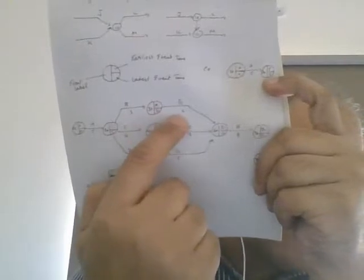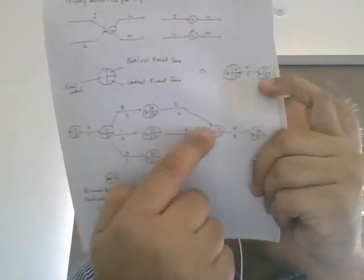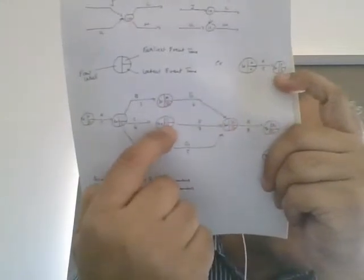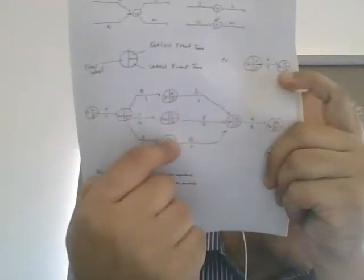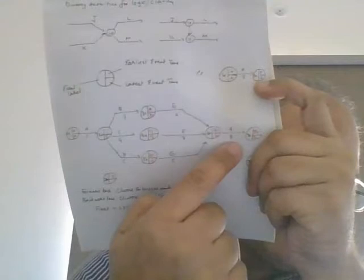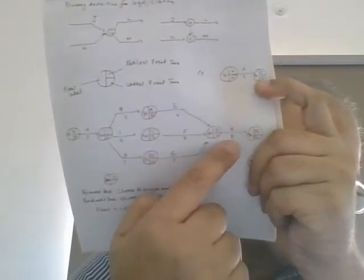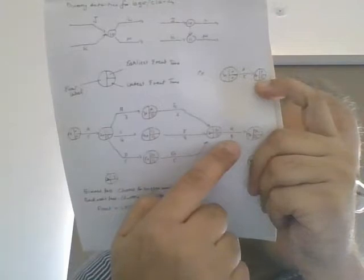The starting of this particular activity E is basically this node and the ending of E is this node. Starting of F is this node, the ending of F is this node. And G begins here and G terminates here. Then we have another activity which is H and its duration is also listed here beneath the line.